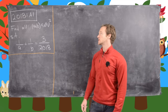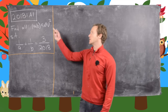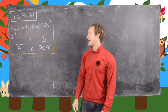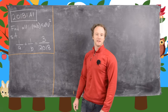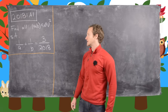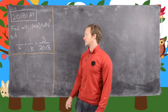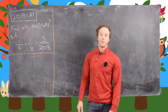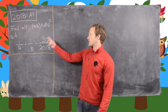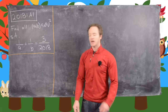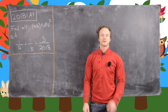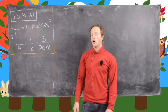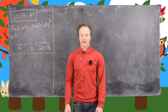In this video we're going to look at the solution to the Putnam problem year 2018 A1. The problem reads as follows: find all A, B both natural numbers such that 1/A + 1/B = 3/2018.